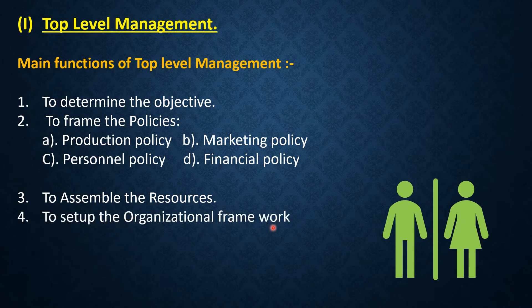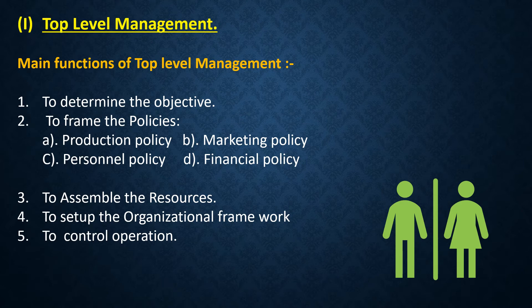Fourth point is to set up the organizational framework. The structure of the organization is established by top management, and rights are delegated from top officers to subordinates. Fifth point is to control operations — with the help of budget, cost, statistical quality control, and accounting, top management controls the operations of the business.